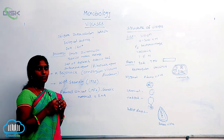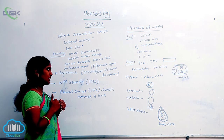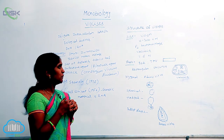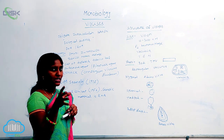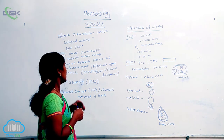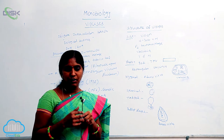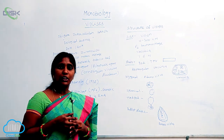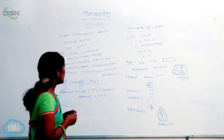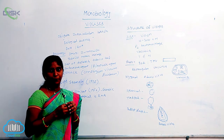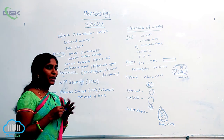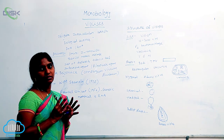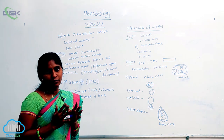Later, scientist Beijerinck continued Ivanovsky's experiments. During his experiments, he again collected the sap and conducted repeated experiments. He concluded that the juice causing the disease should be given the name 'contagium vivum fluidum,' meaning contagious living fluid. He confirmed that viruses are smaller particles than bacteria and cause disease in tobacco plants.